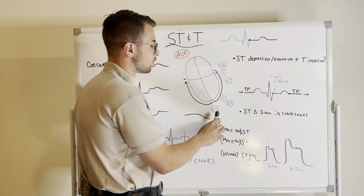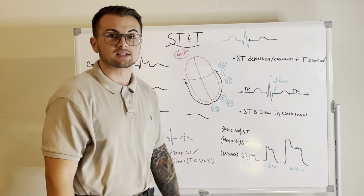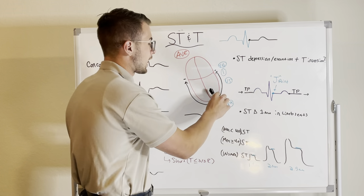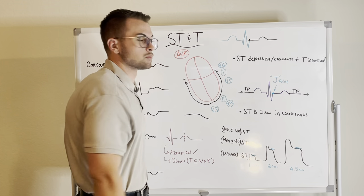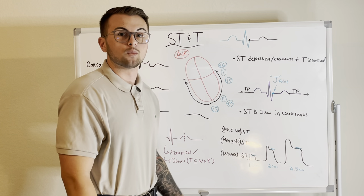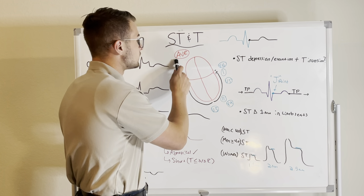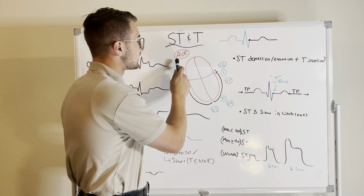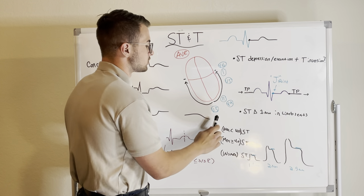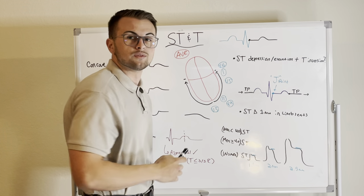Conversely, if the mean girl is headed away from you — specifically leads 1, 2, V3, V4, V5, and V6 — then these are going to be positive. These leads are going to be happy that this repolarization vector is heading away from them. So the T wave is going to be negative in AVR and positive in leads 1, 2, and V3 through V6.